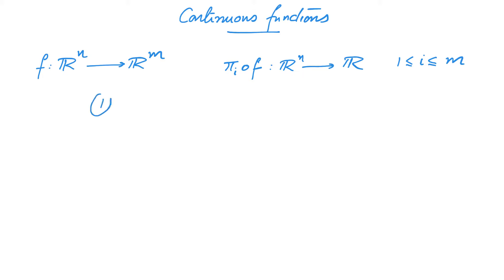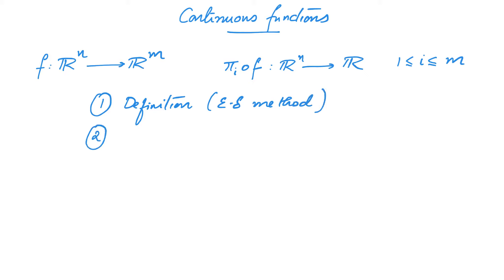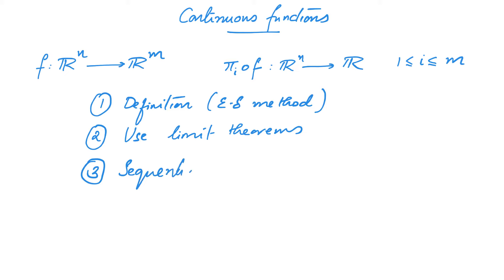So how do we verify whether a given function from Rⁿ to R is continuous or not? Of course we can use the definition or the epsilon-delta method to prove or disprove that a function is continuous, but this in general is a bit cumbersome. Another approach is that we can use limit theorems to prove the continuity of functions using the continuity of some known functions. And finally we can use the sequential criterion to prove the continuity of some functions.